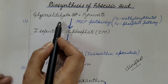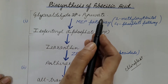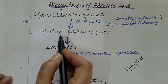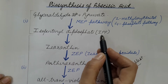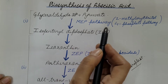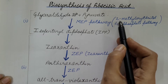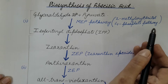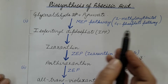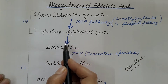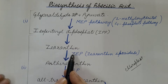First of all, glyceraldehyde-3-phosphate combines with pyruvate and it is converted into isopentanyl diphosphate, or in short IPP, through the MEP pathway — that is the 2-methyl erythritol-4-phosphate pathway. Then this IPP is converted into zeaxanthin.